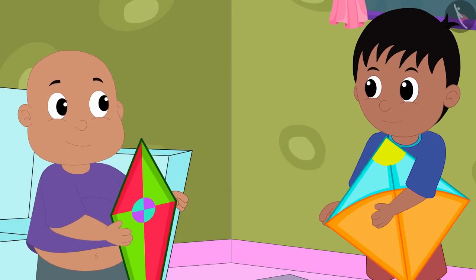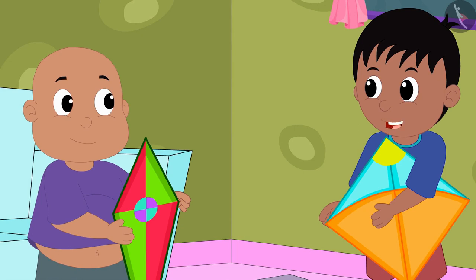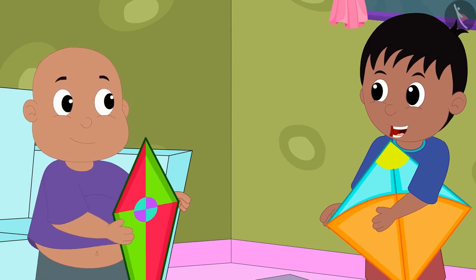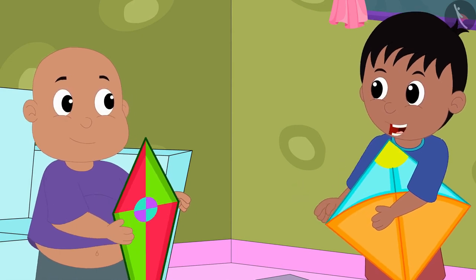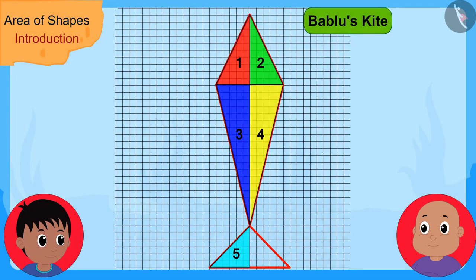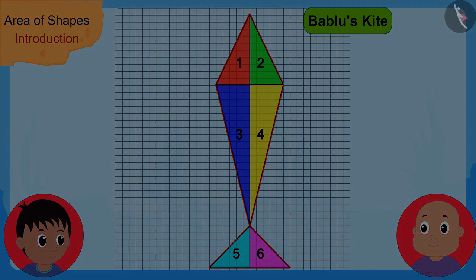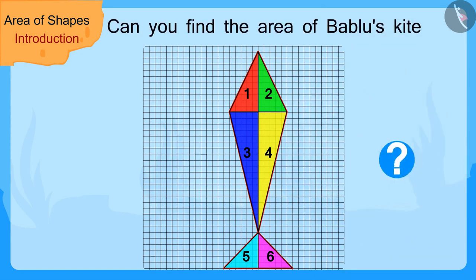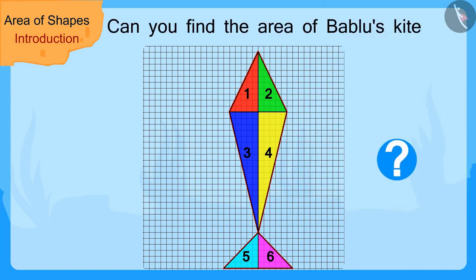Raju said, 'Oh wow, Bablu! This is a very easy process. Let me use it now to find the area of your kite.' Having said this, Raju drew a triangle in the outline of Bablu's kite. Children, can you find the area of Bablu's kite by the process you just learned? If you wish to, you may stop the video and find the answer.